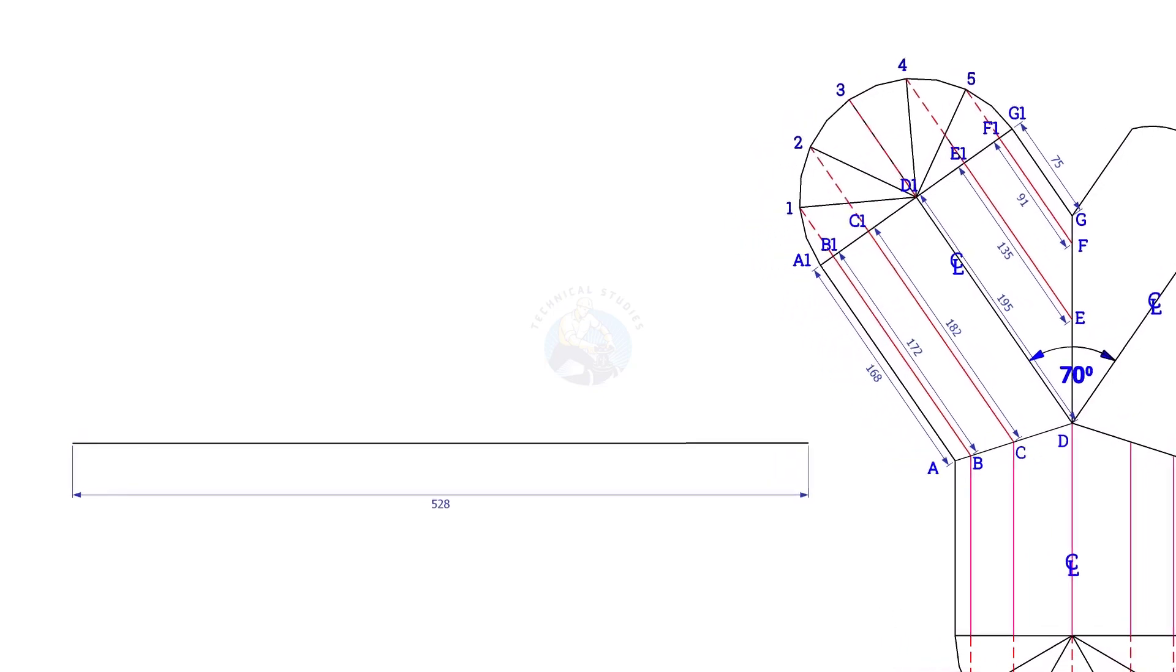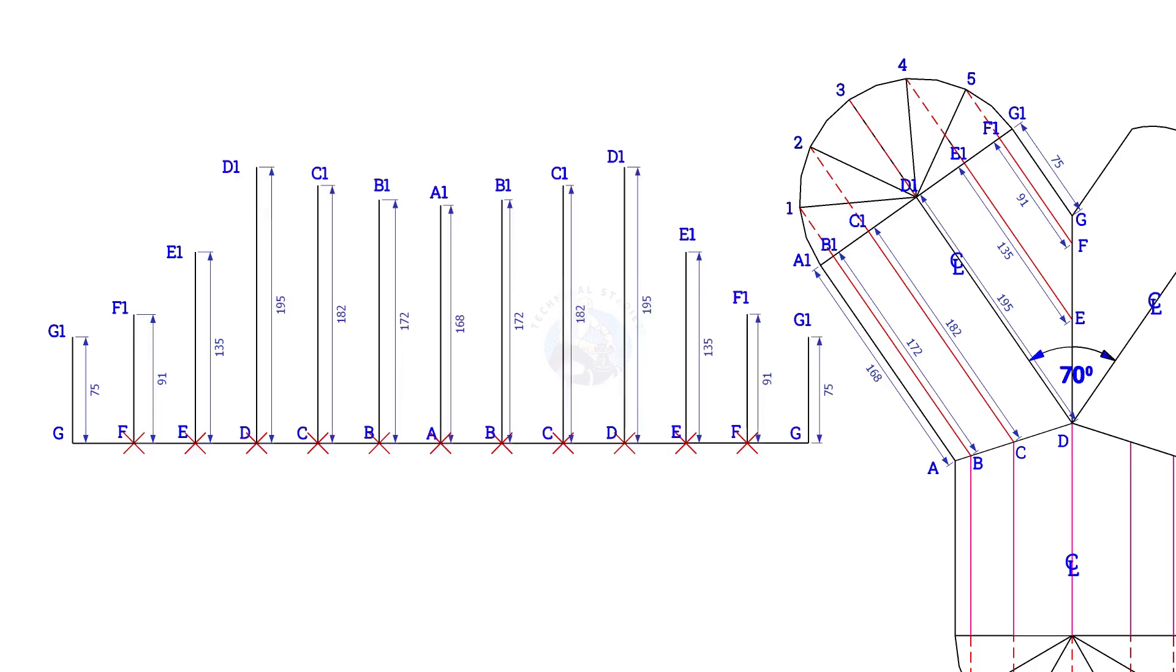Draw the pipe circumference line. Divide the line to 12 equal parts and draw vertical lines G, G1, F, F1, etc. And draw a curve as in the previous layout.